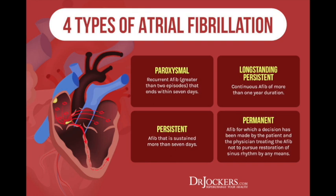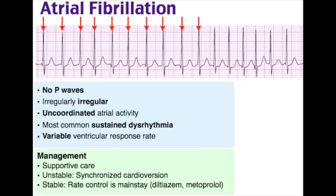Four types of AFib: paroxysmal (self-terminating within seven days, usually under 24 hours; can be recurrent), persistent (fails to terminate, lasts over seven days, requires medical or electrical termination), permanent (persistent AFib over one year, refractory to or not attempted cardioversion), and lone (paroxysmal, persistent, or permanent without evidence of heart disease). Clinical manifestations: symptomatic — palpitations, dizziness, fatigue, dyspnea. Unstable — hypotension, altered mental status, refractory chest pain due to hypoperfusion.